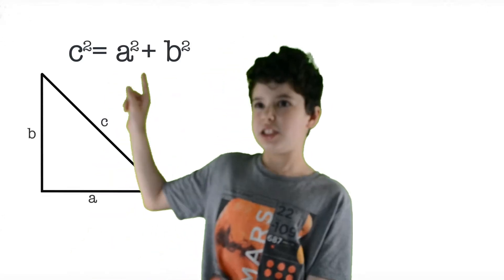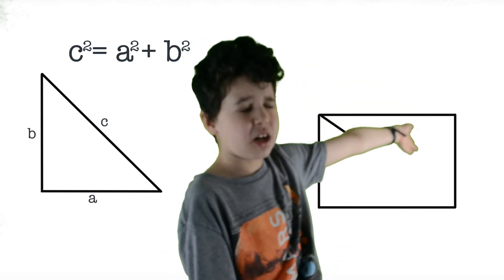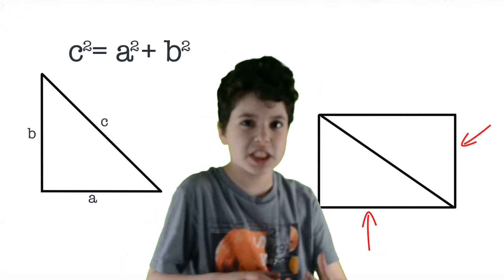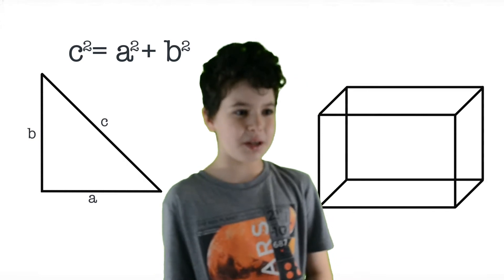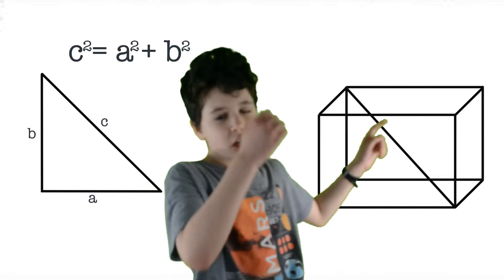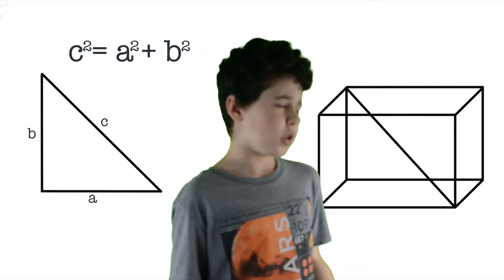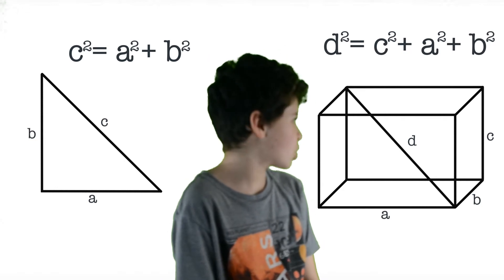You probably know the Pythagorean theorem on a right triangle: the hypotenuse squared equals the sum of squares of the other two sides. Taking a rectangle and its diagonal splits it into two right triangles, so the theorem gives the diagonal length. Generalizing to 3D: for a rectangular prism with sides A, B, and C, the diagonal D satisfies D² = A² + B² + C².